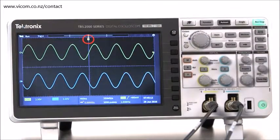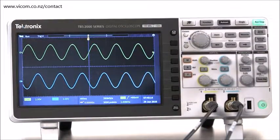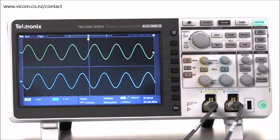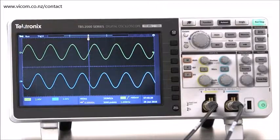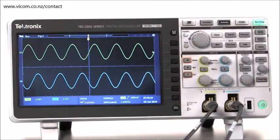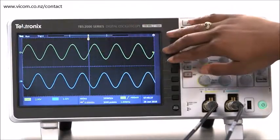Since we're using edge triggering, the trigger point lines up with the intersection of input signal and trigger level. I'll explain edge triggering in a minute, but the part of the waveform before the trigger point is called pre-trigger data, and the part after the trigger is called post-trigger data.